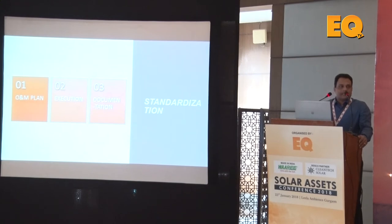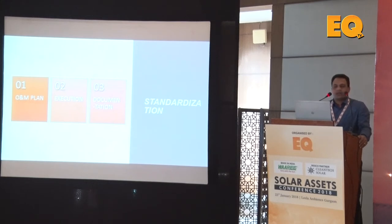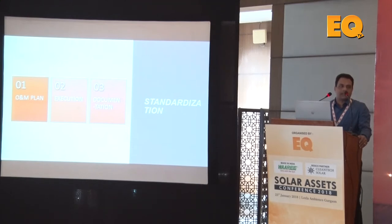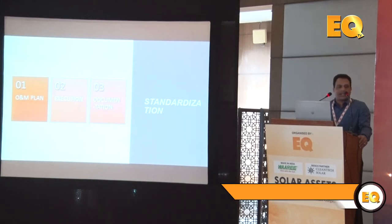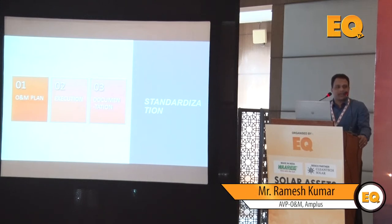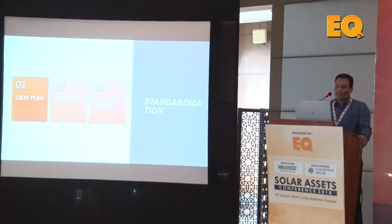The second important thing is standardization. If we want to reduce O&M cost and increase the number of sites per engineer, it is important to have standardization of systems and processes. At Amplus, we create an O&M plan for the complete year covering all plants under operation, along with a resource allocation plan given to site engineers. This actually reduces O&M cost to a significant extent — though of course, execution of the plan is very important.